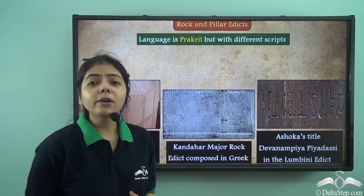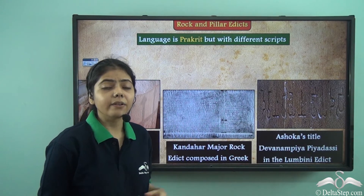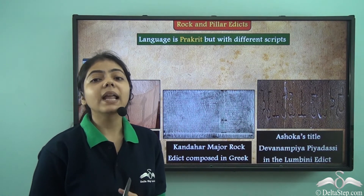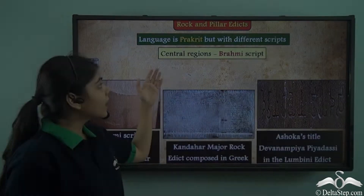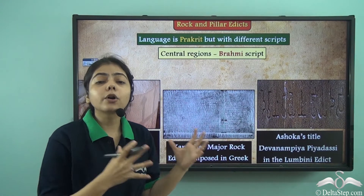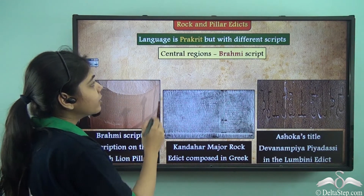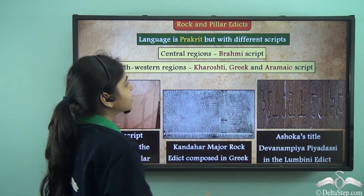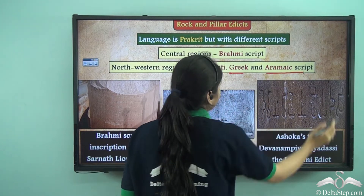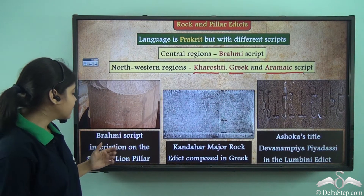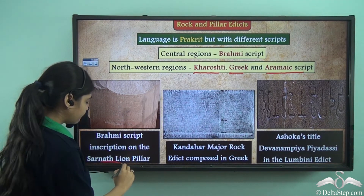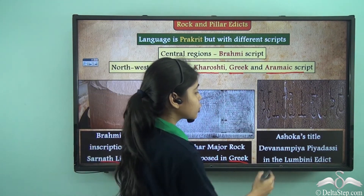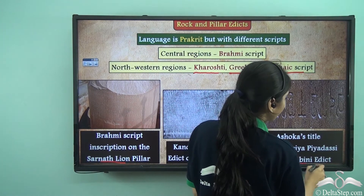The language used for these engravings was Prakrit, the common language of the people at that time, but written in different scripts across the empire. In the central region you find the Brahmi script, and in the northwestern regions you find Kharoshti, Greek, and Aramaic. You can see the Brahmi script inscription on the Sarnath lion pillar, the Kandahar major rock edict in Greek, and Ashoka's title 'Devanam Priya Priyadasi' in the Lumbini edict.